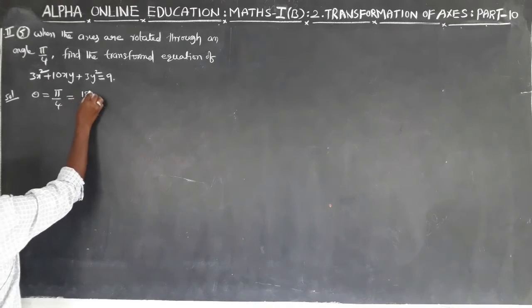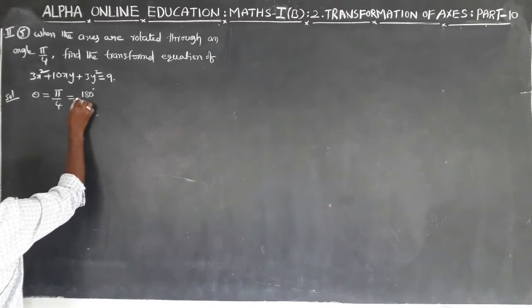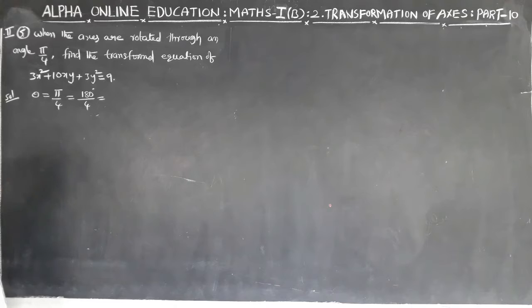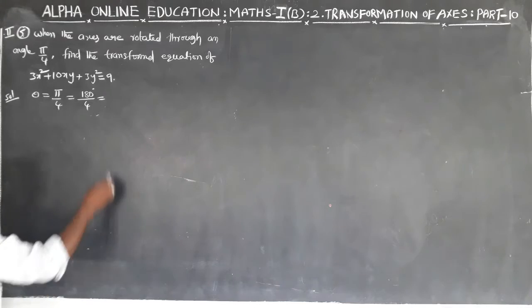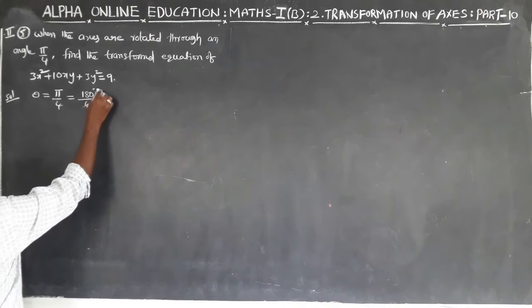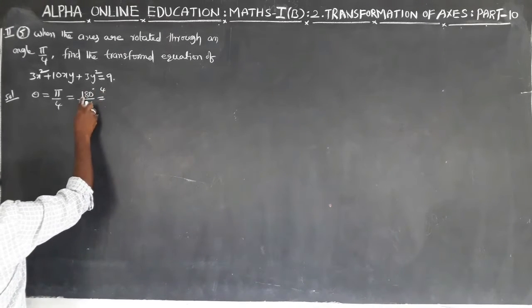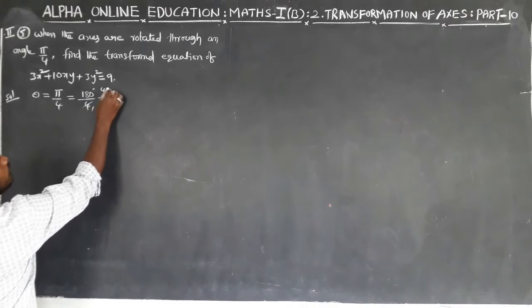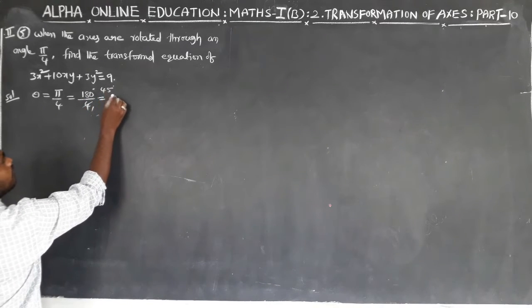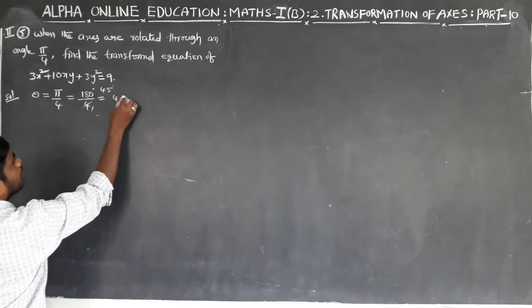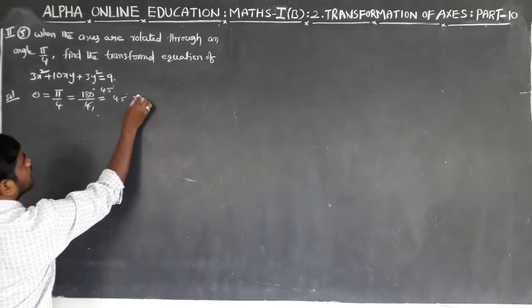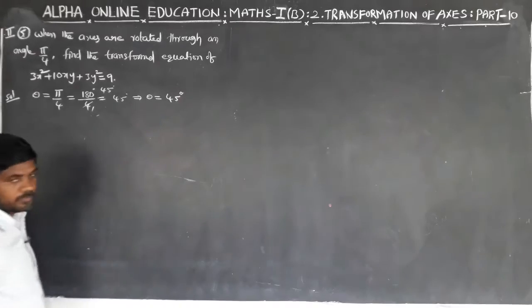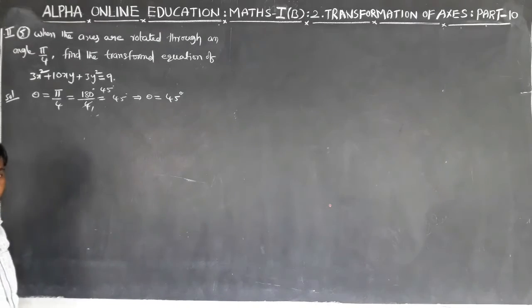π radians is equal to 180 degrees, so π/4 equals 180 divided by 4, which gives 45 degrees. Therefore, theta is equal to 45 degrees.